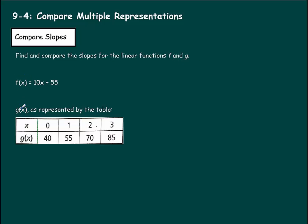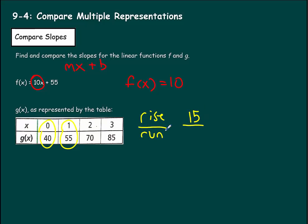So here's f(x) and here's g(x). Don't let g(x) fool you — this is just another way to name a function. If you know slope-intercept form, that's m times x plus b, where m is the slope. So for f(x), 10 would be the slope. For g(x), we'll use the rise over run formula. We can pick two points: (0, 40) and (1, 55). From 40 to 55 is a rise of 15, and from 0 to 1 is a run of 1. So our slope is 15 over 1, or 15. Comparing them, g(x) has a bigger slope by 5.